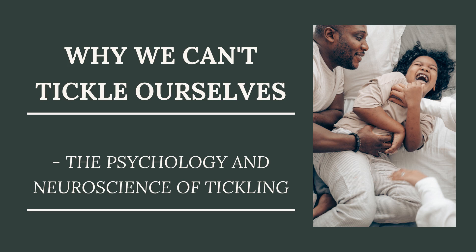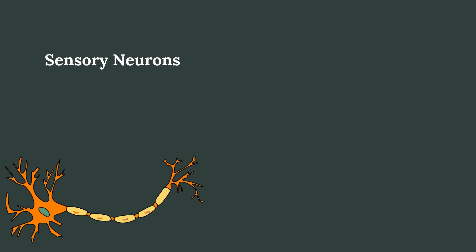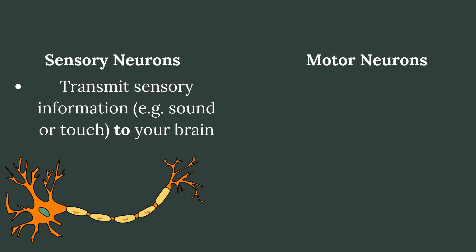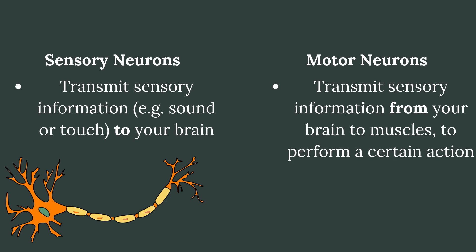To answer the question of why we cannot tickle ourselves, we should first make a distinction between two different kinds of neurons: sensory neurons and motor neurons. As a disclaimer, there are other kinds of neurons as well, but these are the ones we will focus on in this video. Sensory neurons are activated by sensory input like sound or touch, and will transmit this sensory information to your brain.